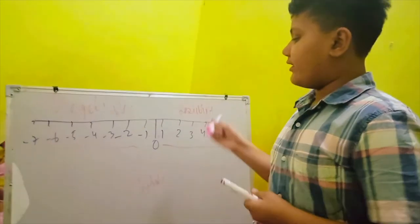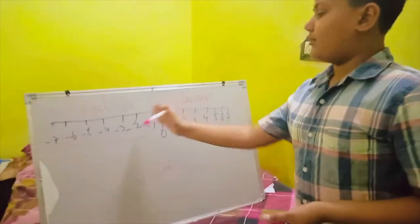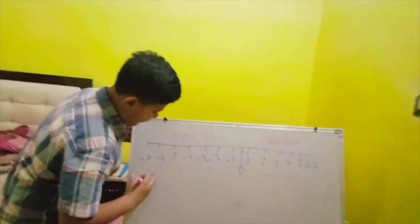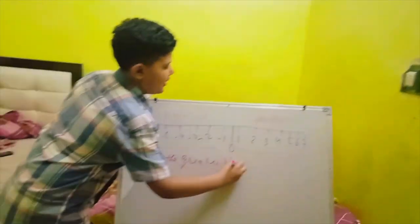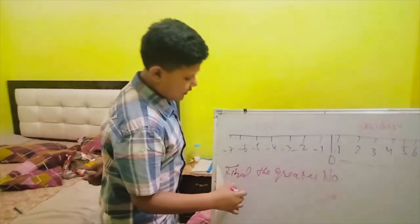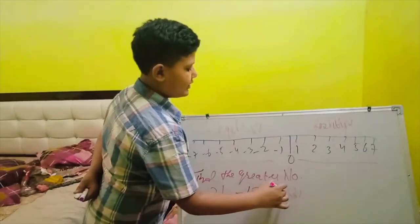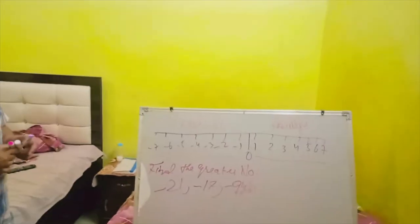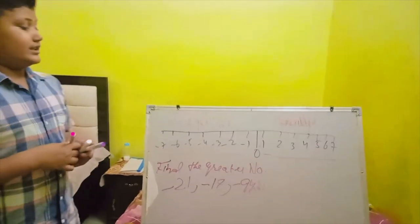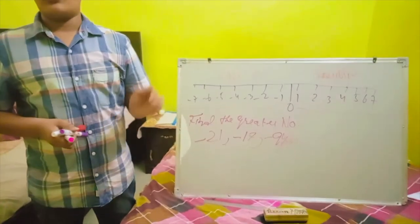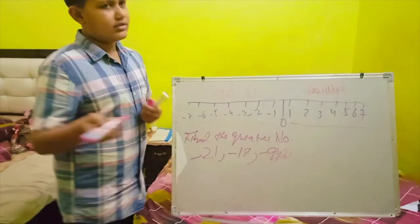Okay, so now we were also studying that in minus the number, the number closer to 0 is called greater. Okay, so now if I will give you a question: find the greater number. And I will give you numbers such as minus 21, minus 17, 17, and minus 94. But in negative, because in negative the number closer to 0 is called the greater form.